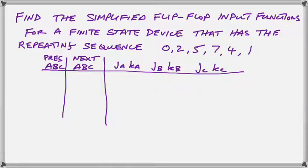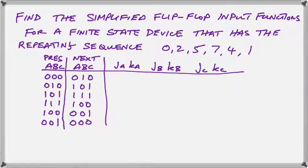Now when we're going to put on the present and next state, we're going to use the sequence. So as you look at it, you can see that we're going from 0 to 2, 2 to 5, 5 to 7, 7 to 4, 4 to 1, and then from 1 back to 0. That step is often forgotten by students. It must begin and end on the same state.